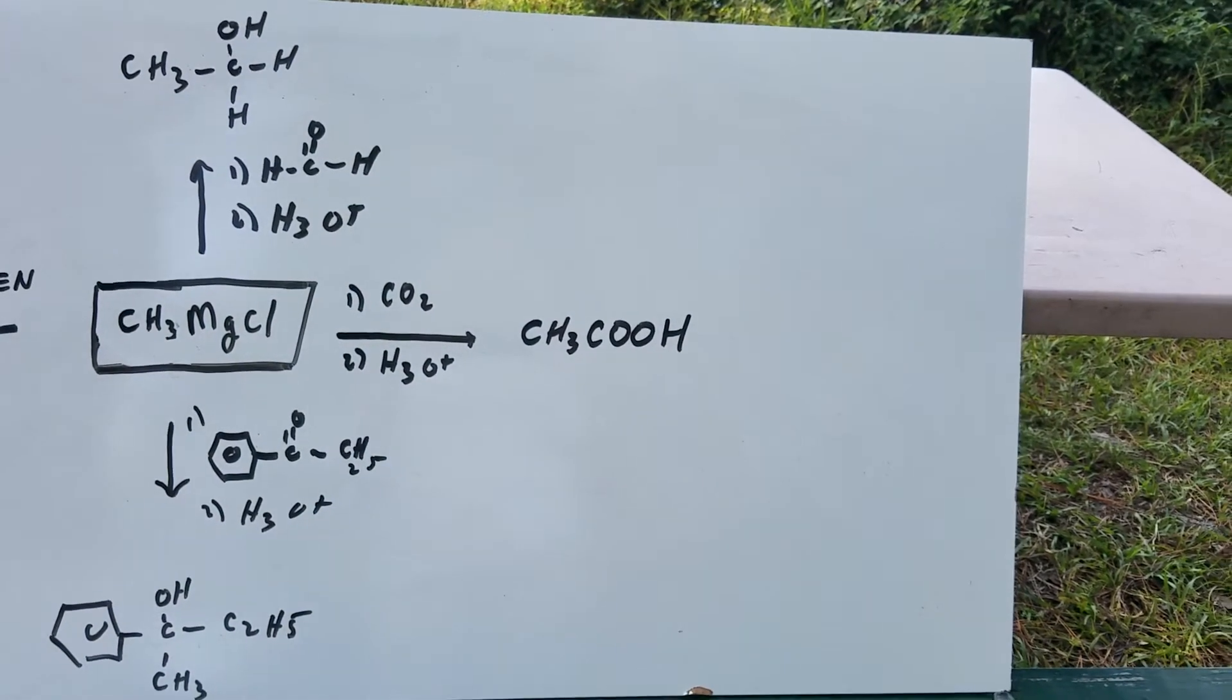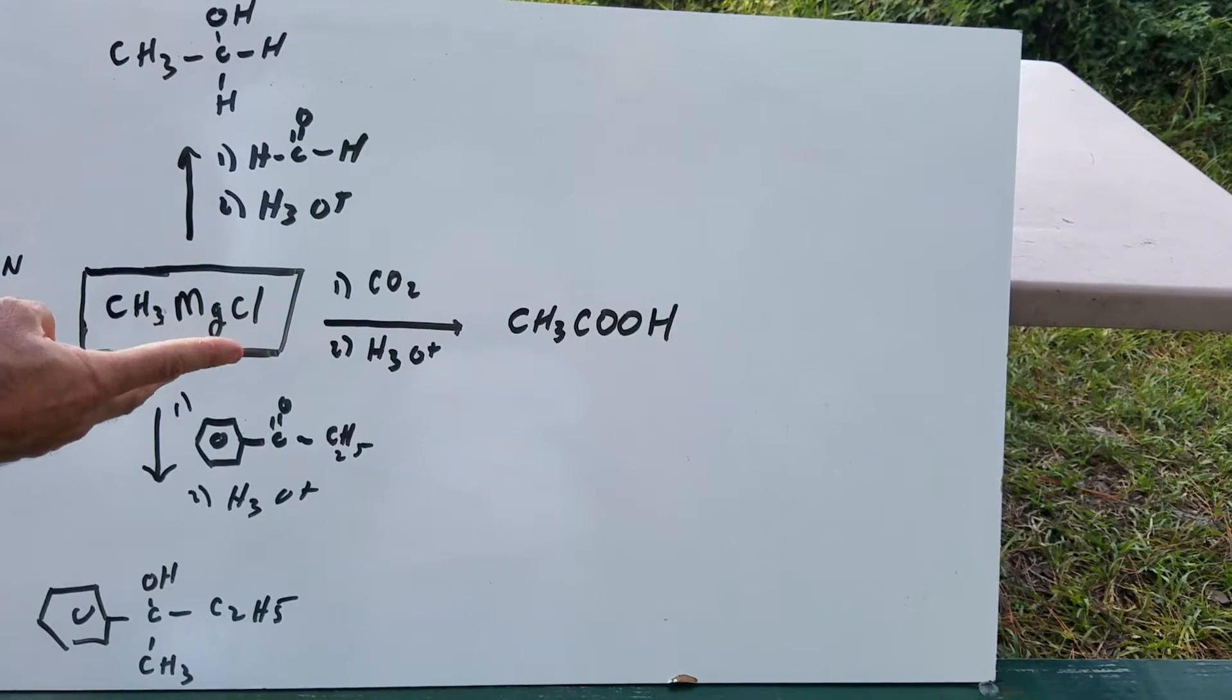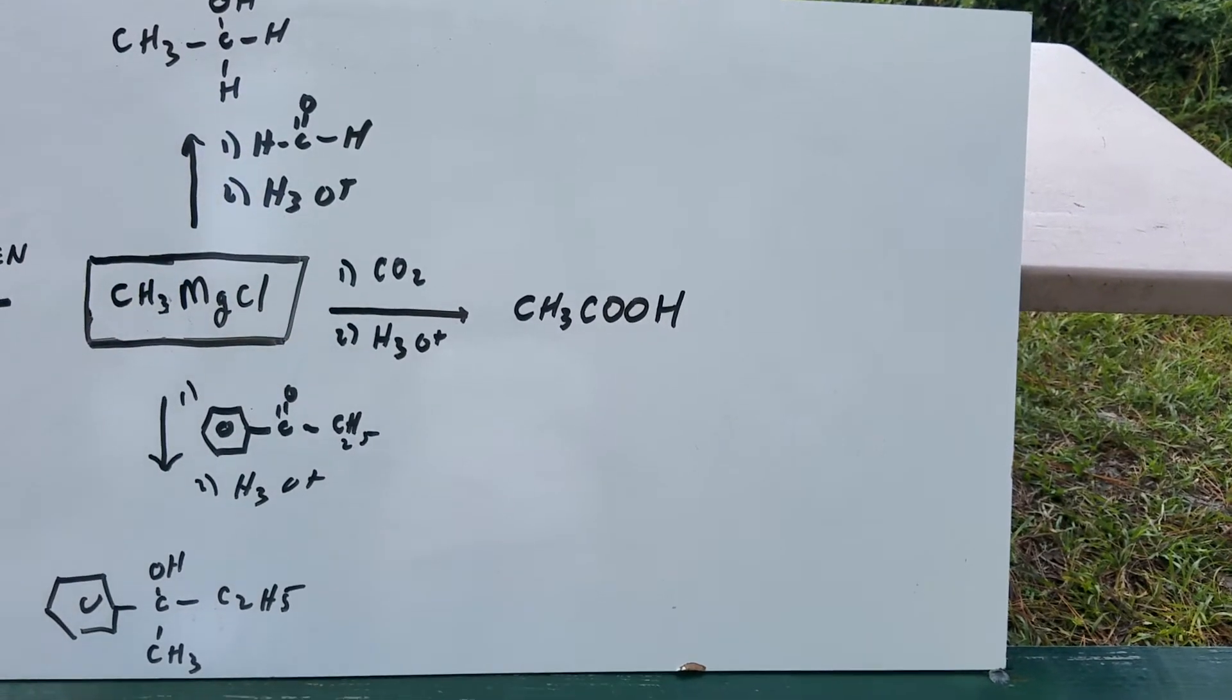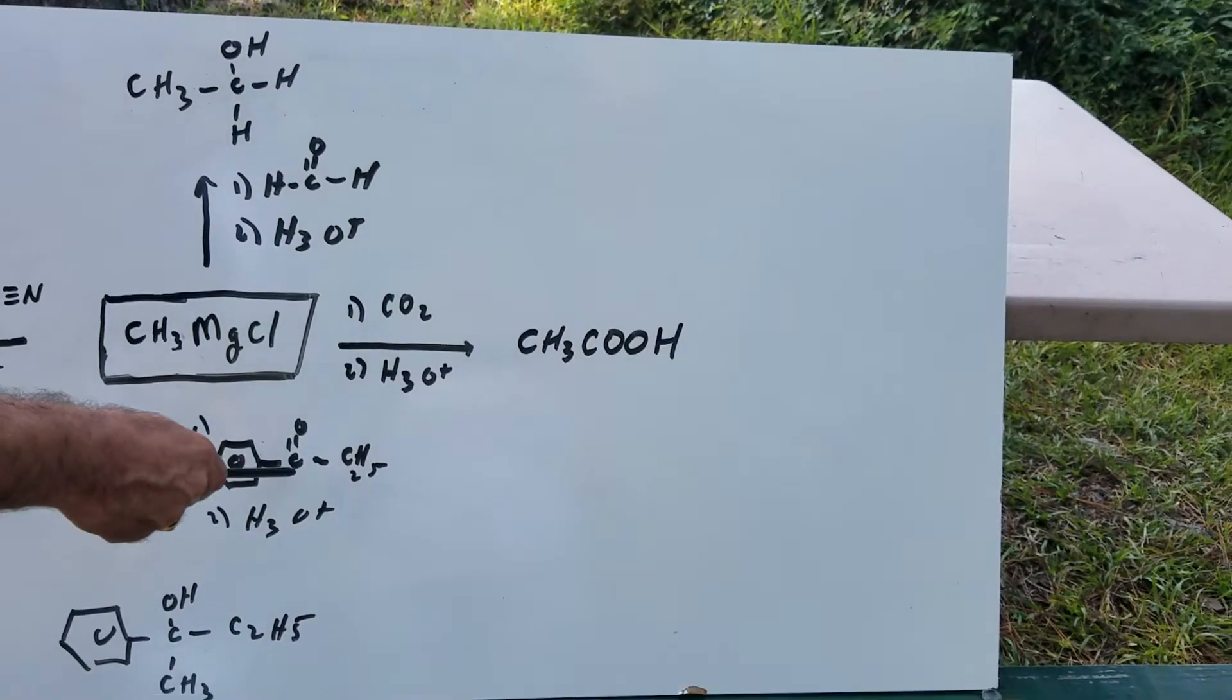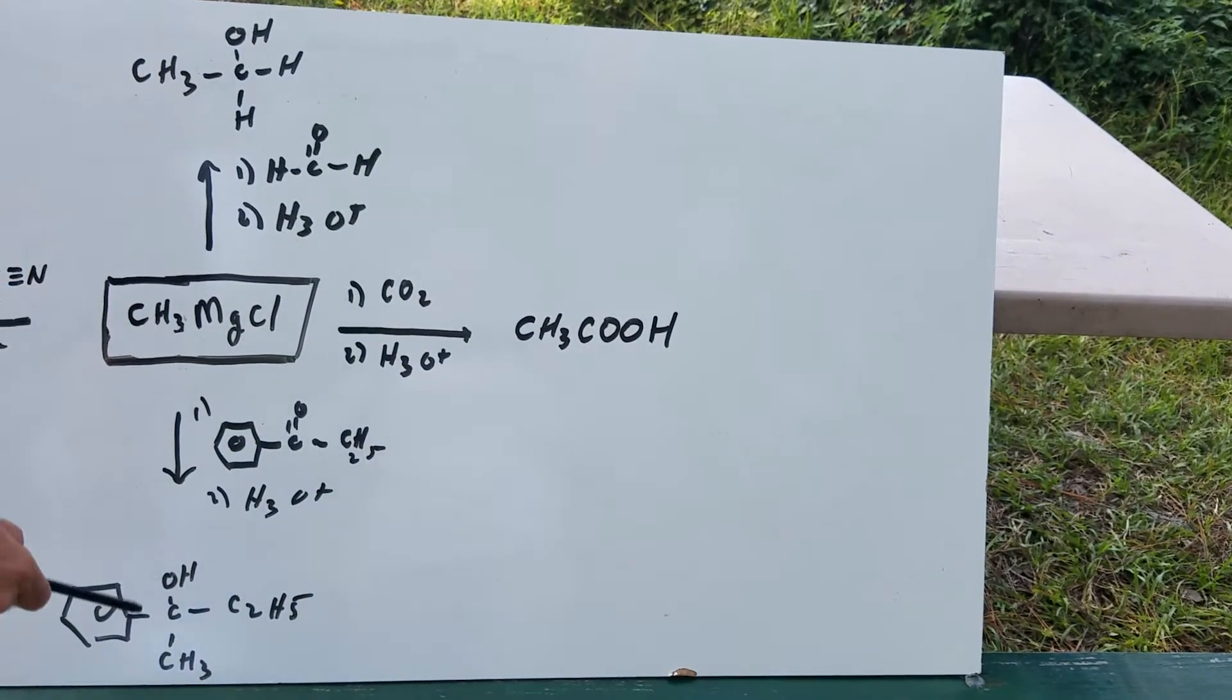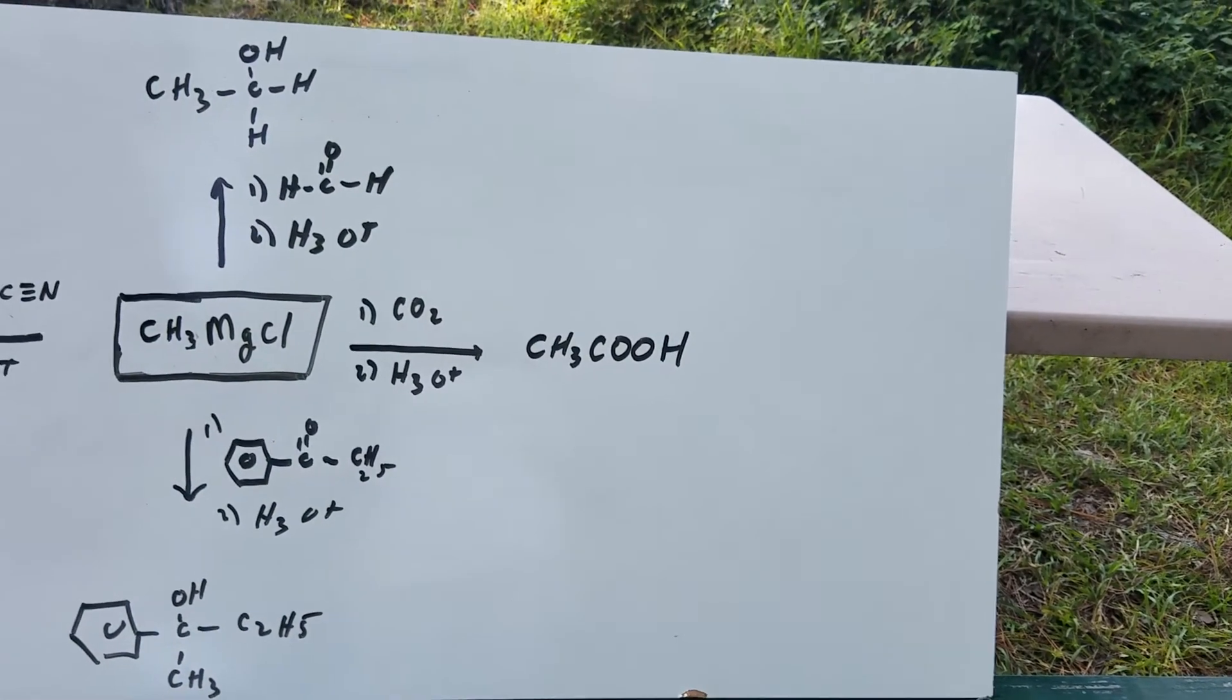Likewise, if you have a ketone, it's done in an analogous way. You get your finger, you break open the carbonyl group, the carbonyl O becomes an OH group, and this carbon, you simply add on the Grignard.